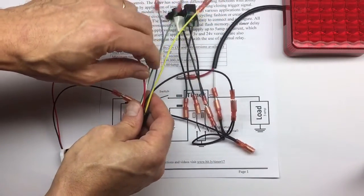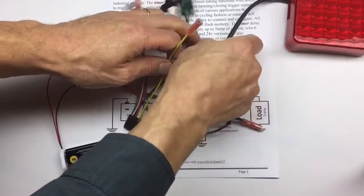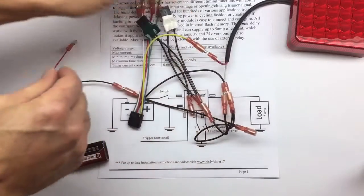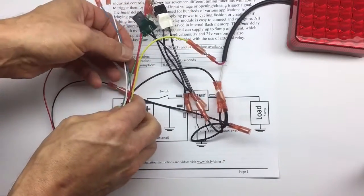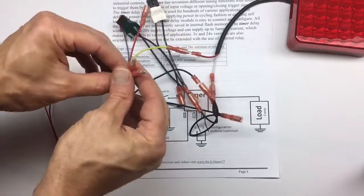Now we need to connect the output from the timer, which is the yellow wire, connected to the light. And we're going to connect the configuration wires. They connect to the green and white.